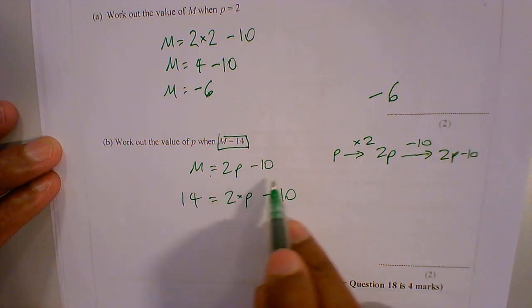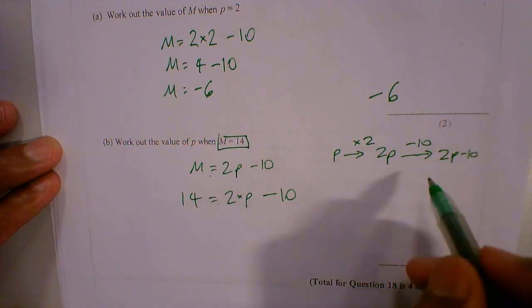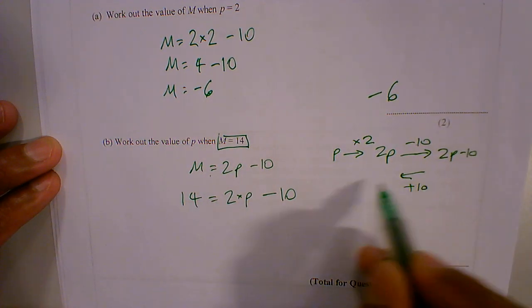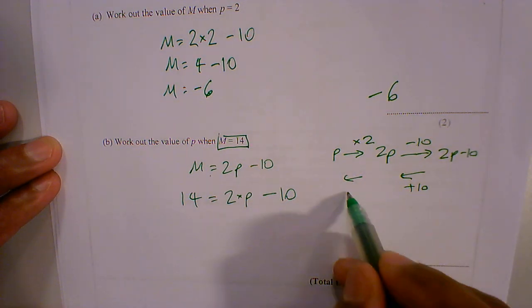So then we're going backwards. So here we're solving this, okay? So we're going backwards, so it's going to be opposites, it's going to be plus 10. And then we're going to be doing opposite of times by 2 is divide by 2.